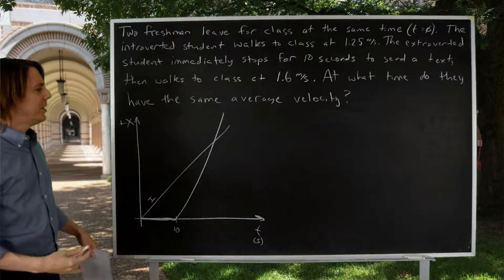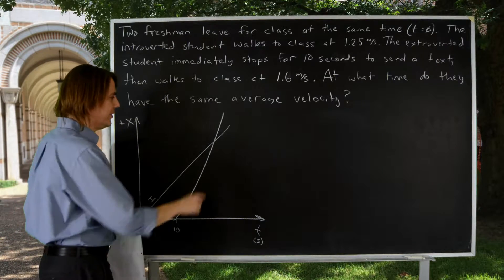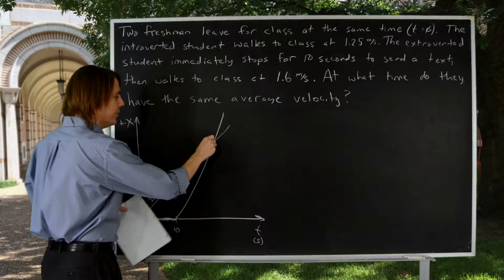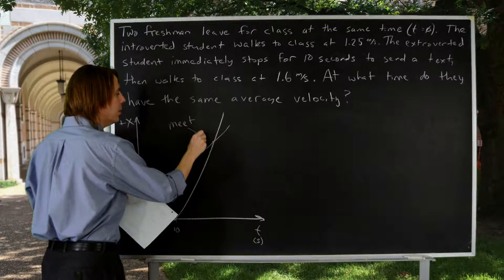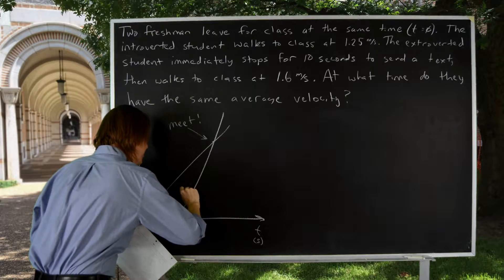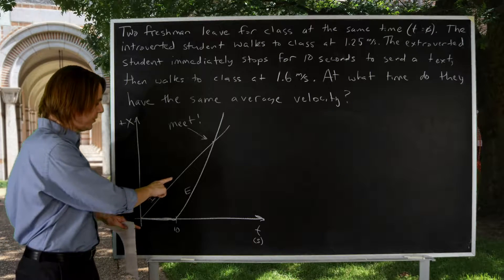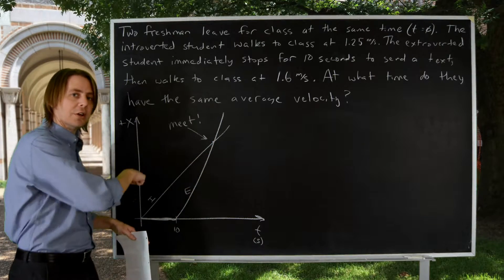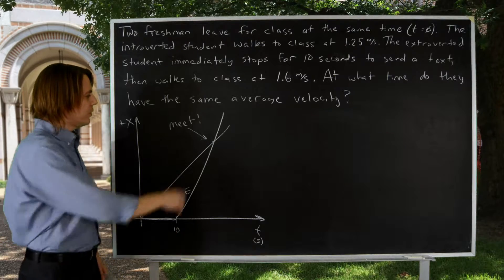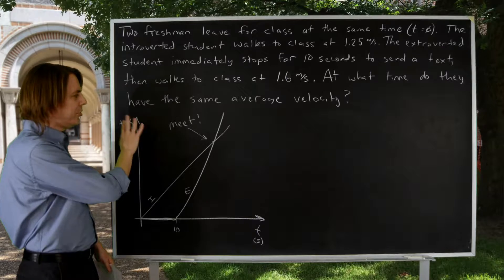And then look at your plot and think about, does anything look interesting with this plot? And one thing that looks interesting is at this point, they cross. This is where they meet, because if you think about what's going to happen, the introverted student got a head start, but the extroverted student went faster. So eventually they will overtake the introverted student. So at some point they meet, and then they just keep going. So that's all we need to do. We've got to plot it, think about it.